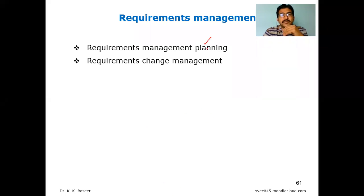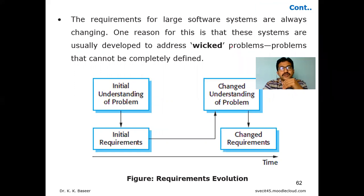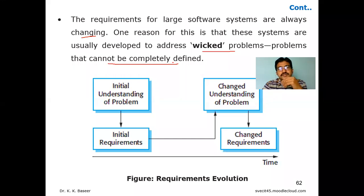The two sub-topics are requirements management planning and requirements change management. Before going into planning, let's understand how the evaluation of requirements is done. Requirements for large software systems are always changing — this is something everyone has to accept. One reason is that these systems are usually developed to address wicked problems, which can't be completely defined because the project is started without having any plan or collecting all background literature.